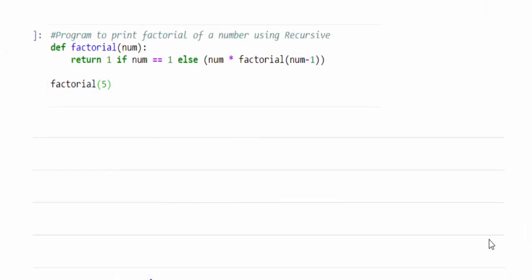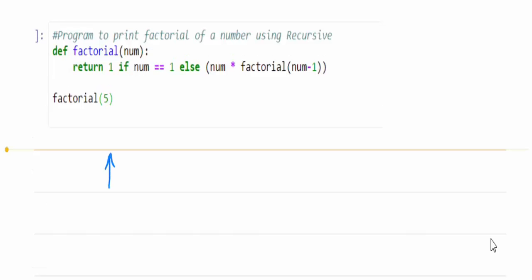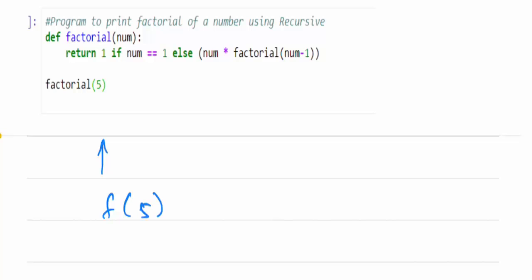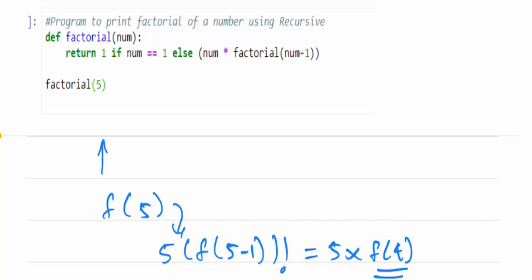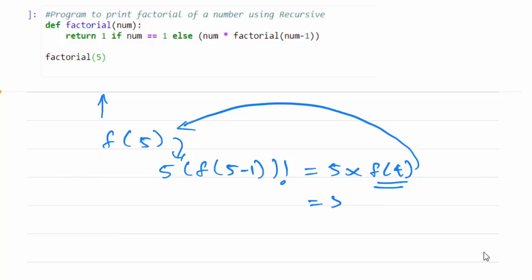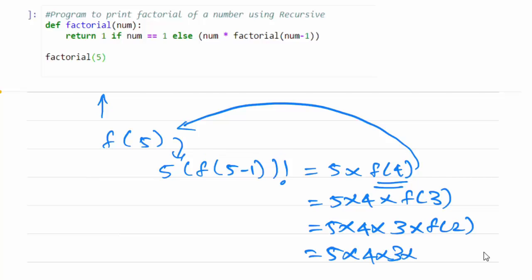How is it working? Let me explain the execution flow. When you enter number 5, factorial of 5 will be executed and it will go to the else condition. 5 into factorial of 4 — once again factorial of 4 will call its own function. In the second time of execution it becomes 5 into 4 into factorial of 3. In the next loop, 5 into 4 into 3 into factorial of 2. Then 5 into 4 into 3 into 2 into factorial of 1, and finally all these values will be multiplied and the output is displayed as 120.